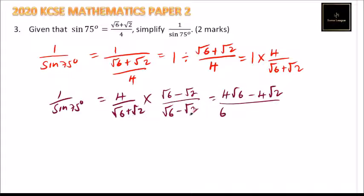This is divided by root 6 times root 6, that will give us 6, root 6 multiplied by root 2, it will be minus root 12, and this is root 2 multiplied by root 6.